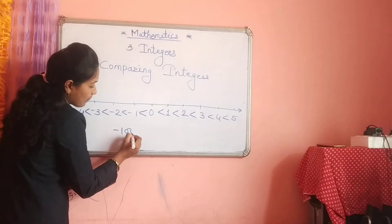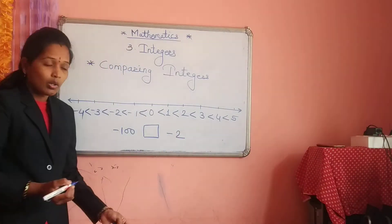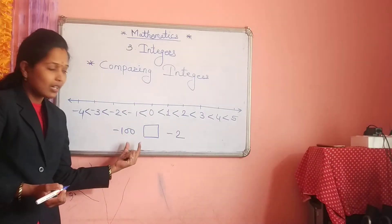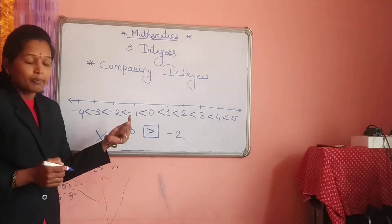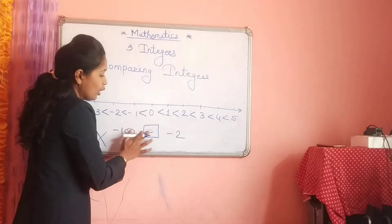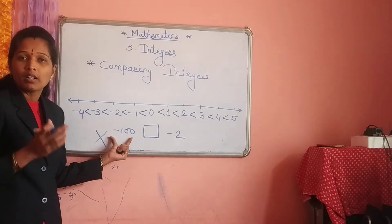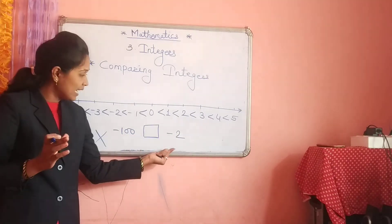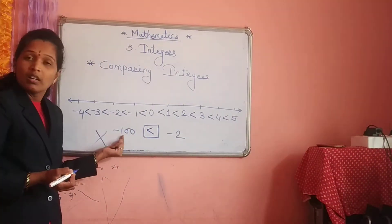Suppose you are given the numbers minus 100 and minus 2. Both numbers are negative. You might think that minus 100 is the bigger number — but that is wrong. Pay attention: both numbers are negative, that is, minus 100 and minus 2. Always remember: when a negative sign is in front of the numbers, the smaller number is greater than the bigger number. So with negative numbers, the smaller number is bigger than the greater one.